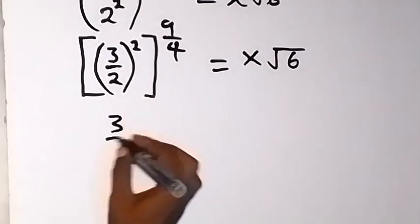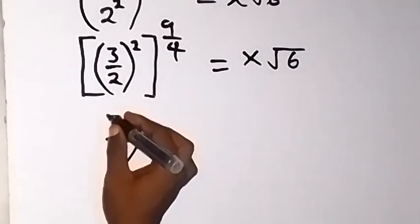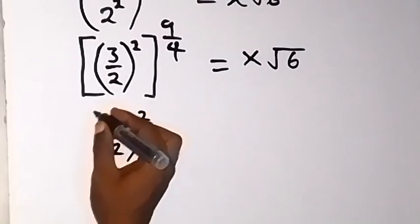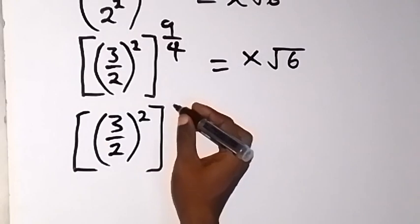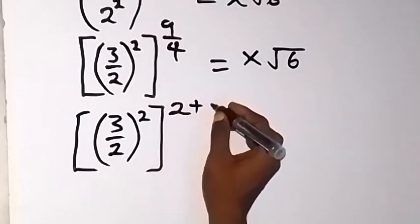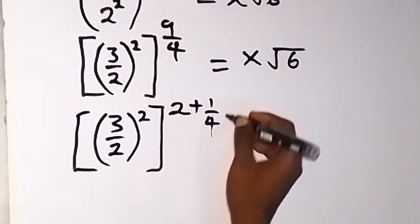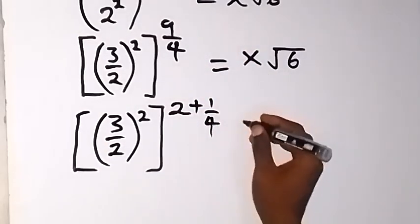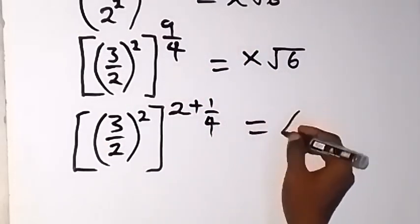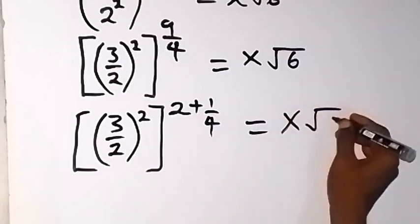When we write this power in another way, we have 3 over 2, raise to power 2, then raise to power, we can write this as 2 plus 1 over 4, because 4 in 9, that's 2 remainder 1. Then equals x root 6.